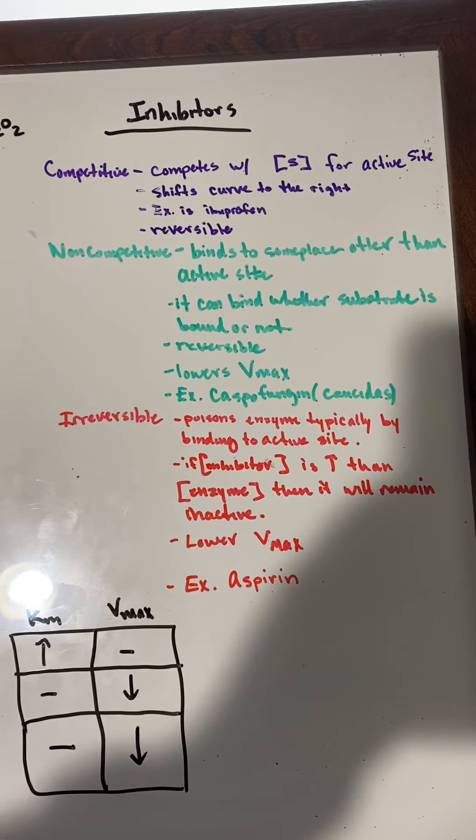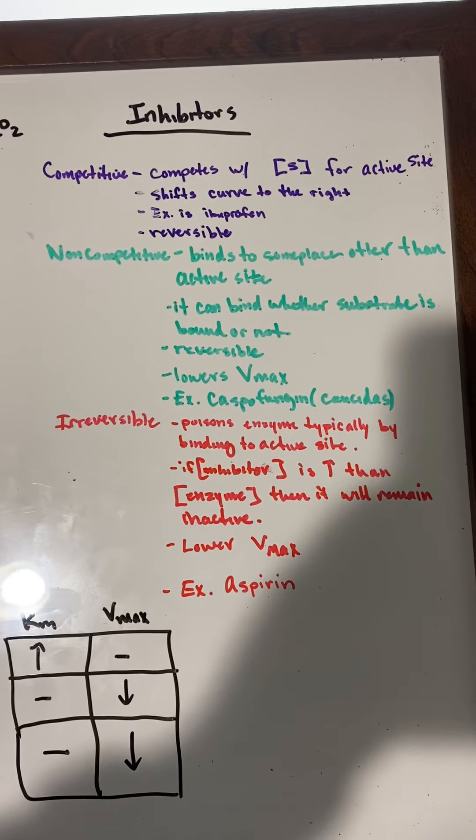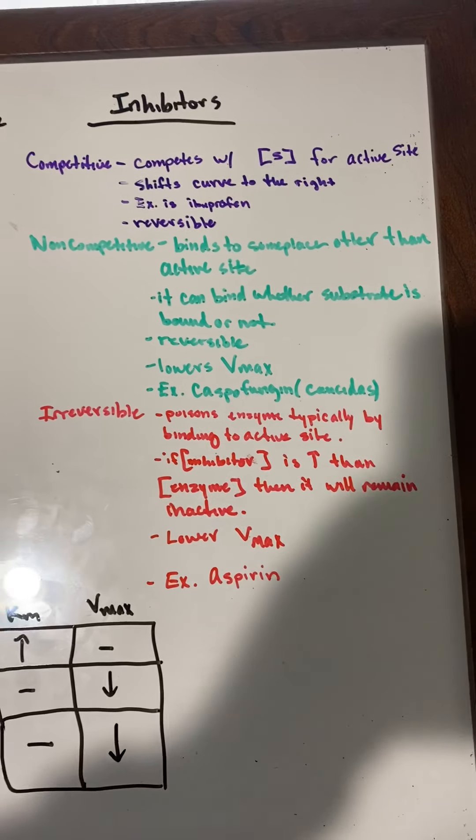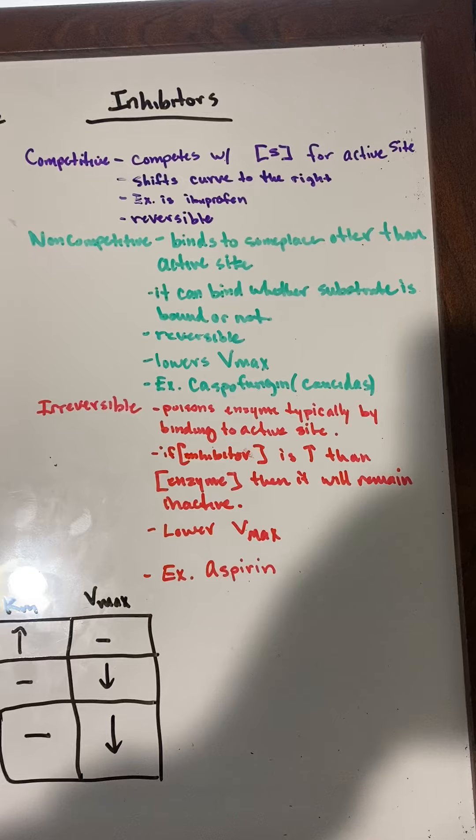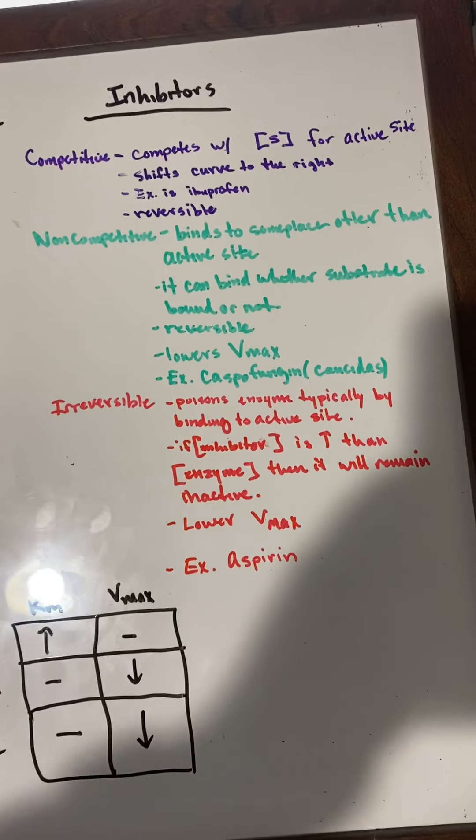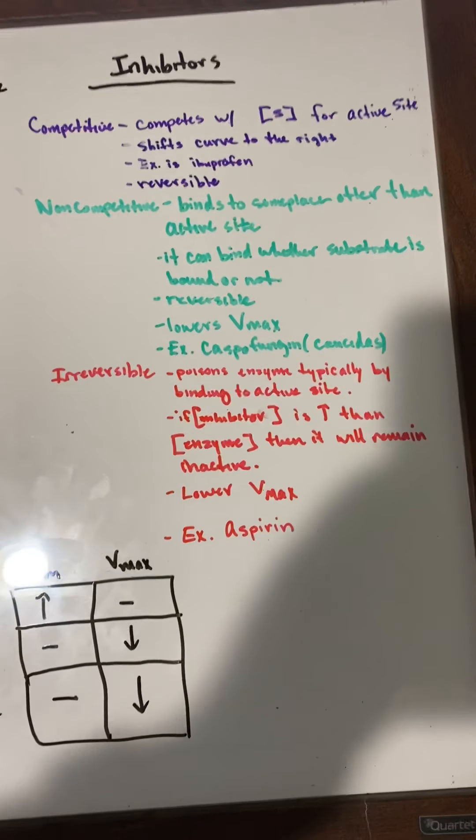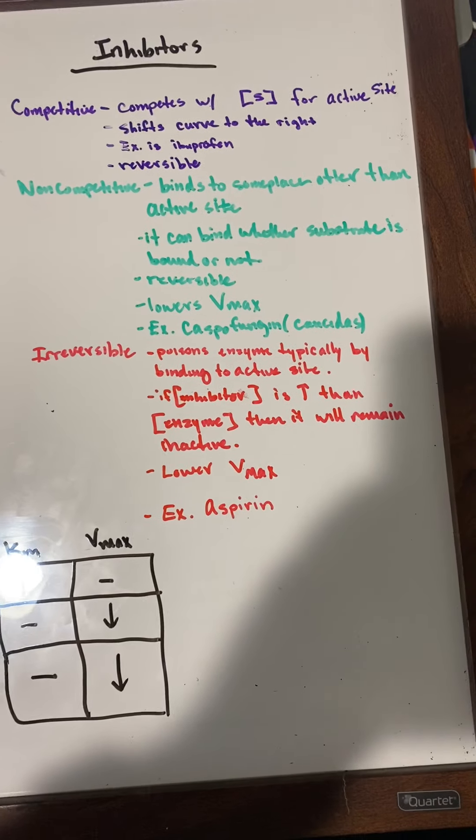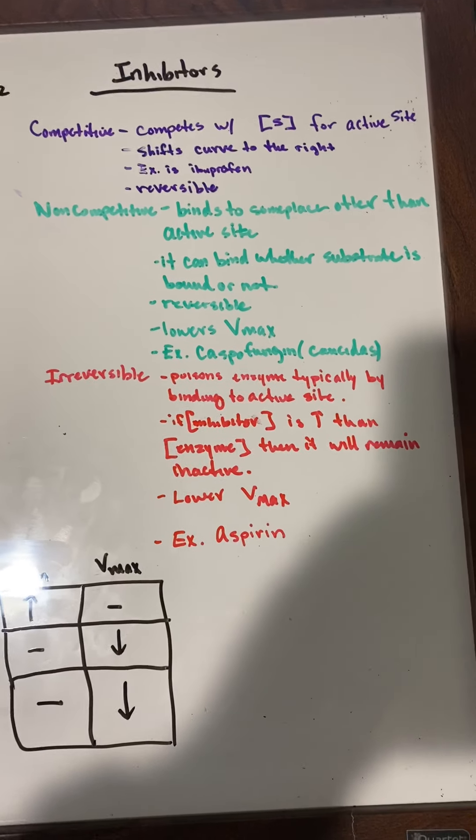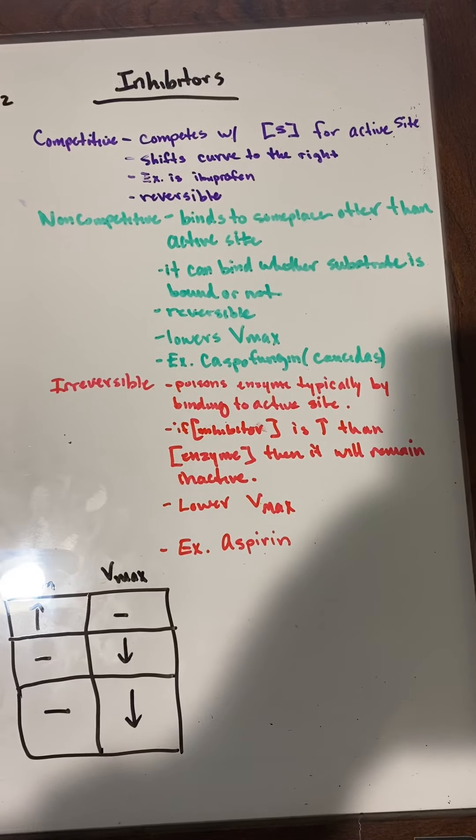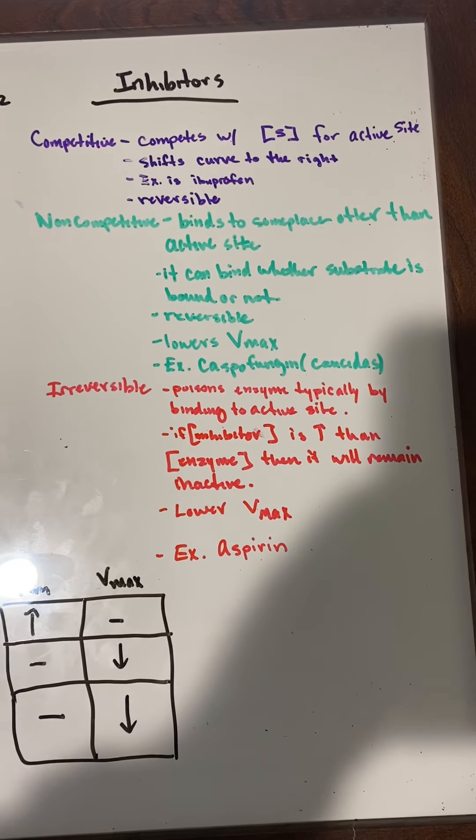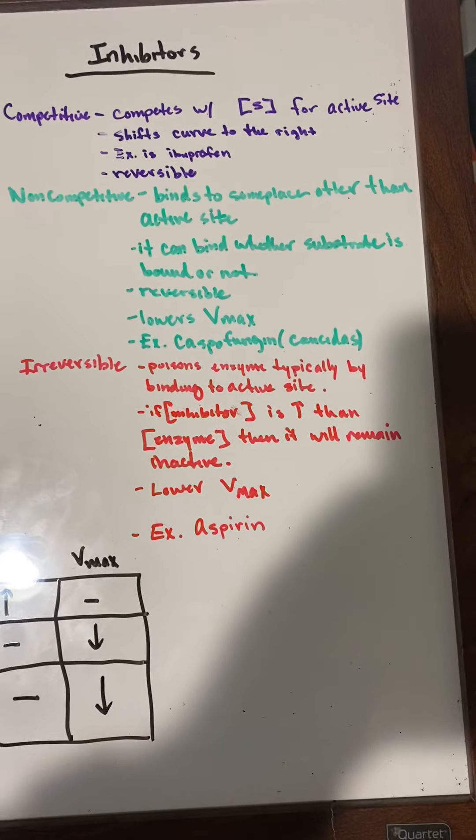We have non-competitive inhibitors, which bind to some place other than the active site. It can bind whether the substrate is bound or not—it will go in and bind even if there's nothing there to activate it. This one lowers the Vmax, and the example we have is caspofungin or I think it's called Candidas.